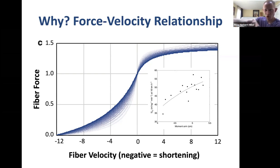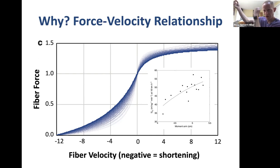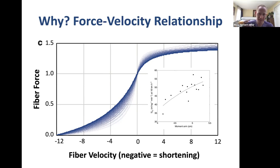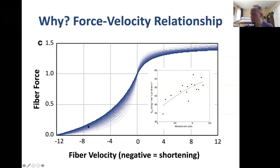So a short moment arm — muscle close to the joint center — means the muscle shortens slowly for a given speed of joint motion. A long moment arm — muscle far from the joint center — means the muscle must shorten much faster. The longer the moment arm, the further to the left you are on the force-velocity curve, where faster shortening means less force can be produced.